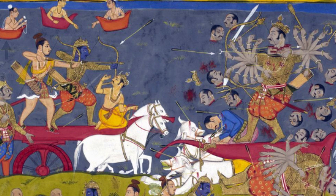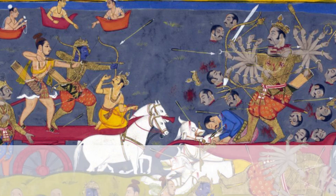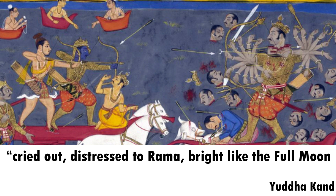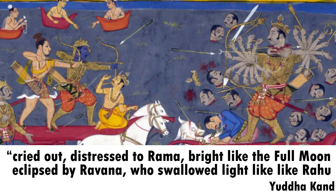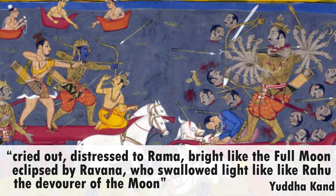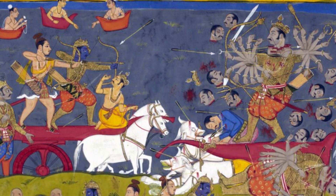Seeing this, all the gods, the sages, and celestial beings who were watching the war cried out, distressed to see Rama — bright like the full moon — eclipsed by Ravan, who swallowed light like Rahu, the devourer of the moon. In retaliation, Ram shot an arrow at the demon king and cut his head off.